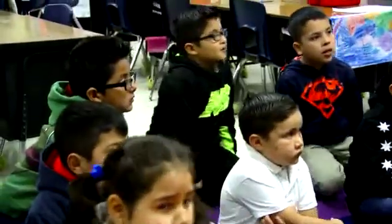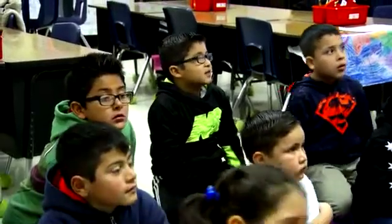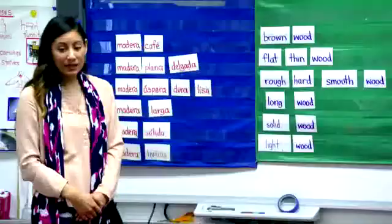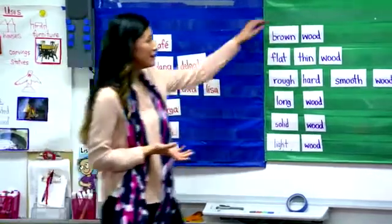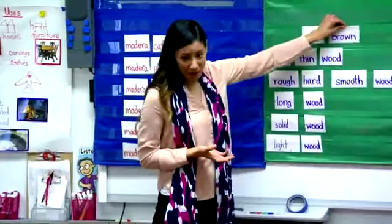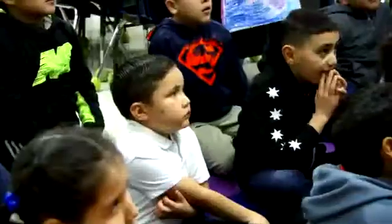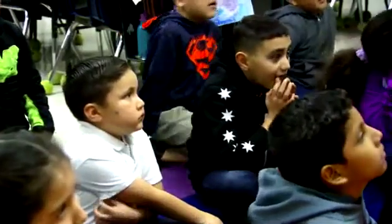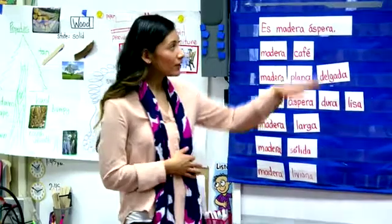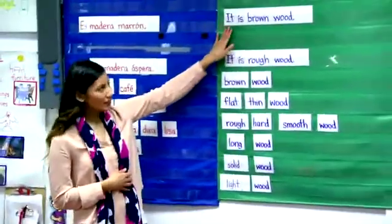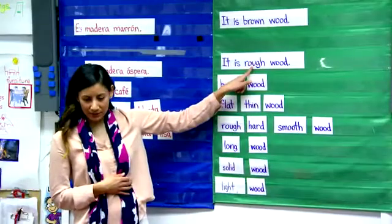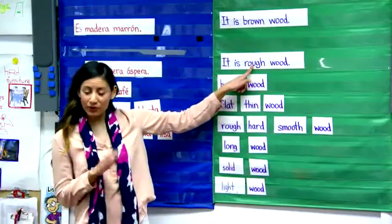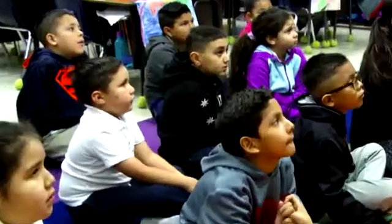Diego observes: 'If it says wood brown, it's not going to make sense. But it's going to make sense if you say the wood is brown.' Exactly — it just doesn't make sense in English to say 'wood brown.' In English, we say 'brown wood.' Now let's share a sentence in English: 'It is brown wood. It is rough wood.' The adjective — does it go before or after the noun? Before.